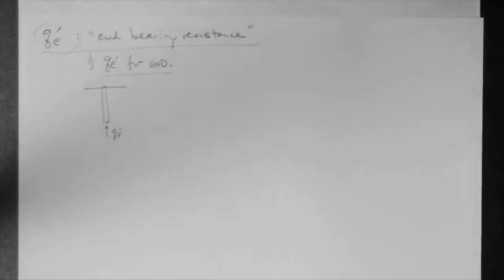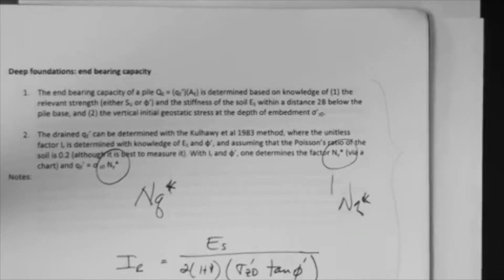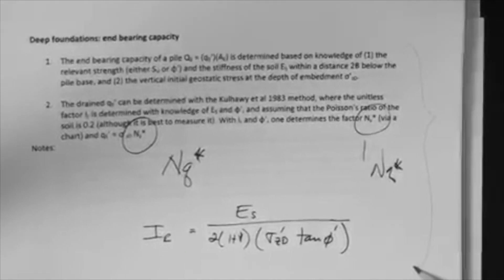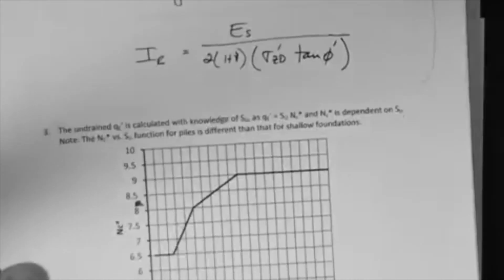So, if you go to your reader, let me just get the reader, you'll see that there's a page, very close to the previous page, that says deep foundations and bearing capacity. The top portion is associated with the Qe for drained conditions. You can ignore this part. Just go to the bottom, and on the bottom, you'll see this plot.